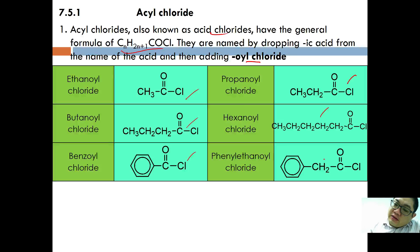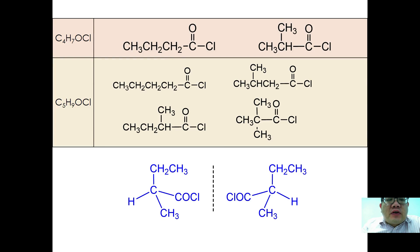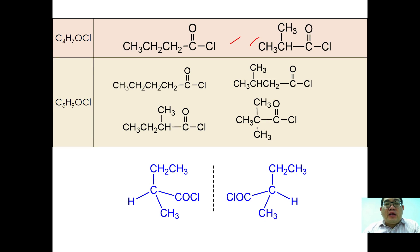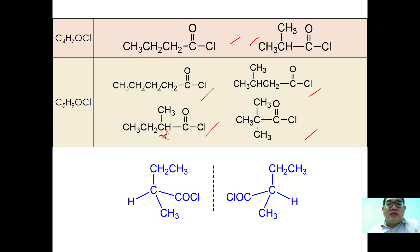Benzene with acyl chloride is benzoyl chloride, and benzene with a CH2COCl is phenyl ethanoyl chloride. For isomers: C4H7OCl has two isomers — butanoyl chloride and 2-methyl propanoyl chloride. C5H9OCl has four isomers: pentanoyl chloride, 2-methyl butanoyl chloride, 3-methyl butanoyl chloride, and 2,2-dimethyl propanoyl chloride. Among them, 2-methyl butanoyl chloride is optically active because it is surrounded by four different groups.